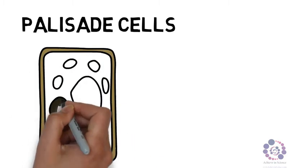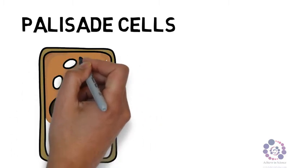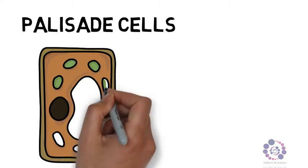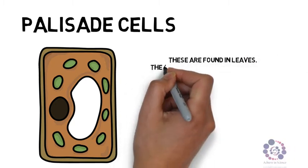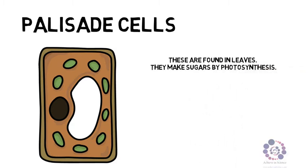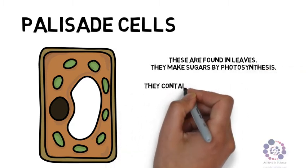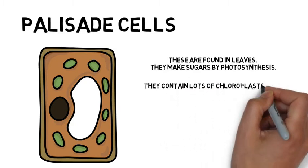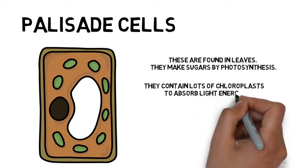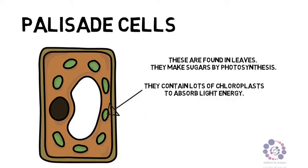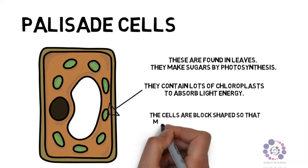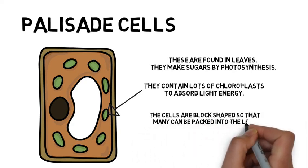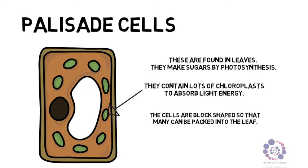We then move on to palisade cells, which you would have met when studying the leaf. Palisade cells are found at the top of the leaf and contain many chloroplasts. Chloroplasts are the site of photosynthesis, which is why they're found at the top of the leaf where they receive direct sunlight. In photosynthesis, carbon dioxide and water react together in the presence of sunlight to produce glucose and oxygen. Having many chloroplasts allows the maximum amount of light to be absorbed so maximum photosynthesis can occur. They are also block-shaped so they can fit as many of these cells as possible within the top of the leaf.